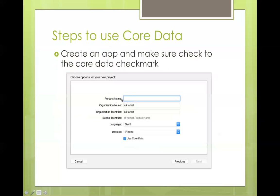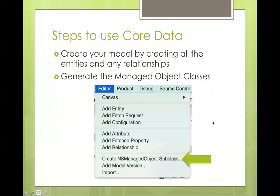First, when we create a new app, we type in the app name, select the language, and usually the Core Data option is not checked. So if you want to use Core Data, we check this box, and it adds the framework and everything needed to start using Core Data. The second step is to create your model — you define your classes, entities, and any relationships between those objects or entities.